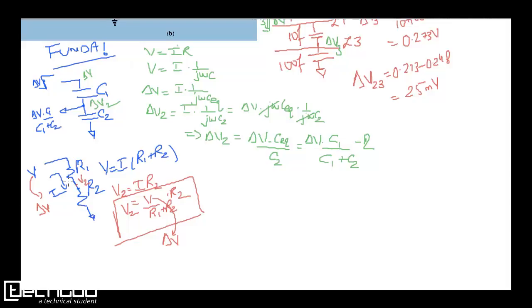The current that is passing through R1 and R2 will be the same. So V2 is I times R2. Now equate it. So I is V by R1 plus R2 into R2 times delta V. So this is the amount of jump you are getting across R2. Same you can solve for capacitor. It is not magic. So V is I into R. Here, V is I into 1 by j omega C. So the amount of glitch here is delta V.